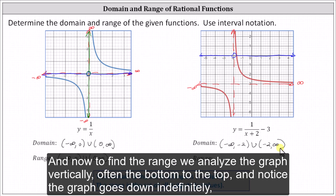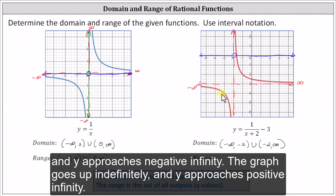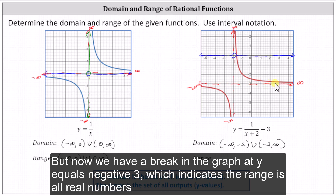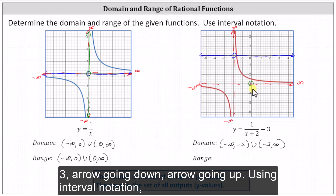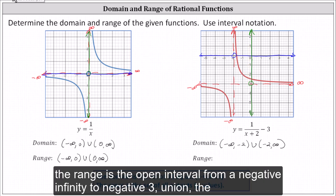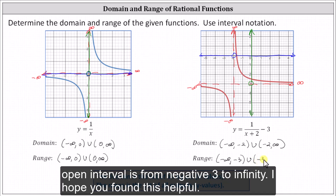Now to find the range, we analyze the graph vertically from the bottom to the top. Notice the graph goes down indefinitely and y approaches negative infinity. The graph goes up indefinitely and y approaches positive infinity. But we have a break in the graph at y equals negative three, which indicates the range is all real numbers except y equals negative three. If we were to graph on the y-axis, we'd have an open point at y equals negative three, arrow going down, arrow going up. Using interval notation, the range is the open interval from negative infinity to negative three, union the open interval from negative three to infinity.